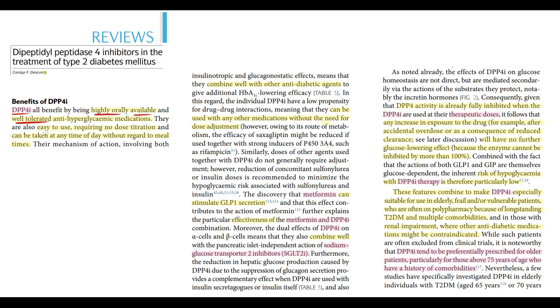The major benefits of DPP-4 inhibitors is that they are highly orally available, they are well-tolerated and easy-to-use medications. They do not require titration, which is very good for physicians, and they can be taken at any time of the day without regard to meals, which is good for patients. One of the major benefits of DPP-4 inhibitors is that they can be combined with other anti-diabetic agents. We can use them in combination with metformin, we can use them in combination with SGLT2 inhibitors, and we can use them with insulin itself.